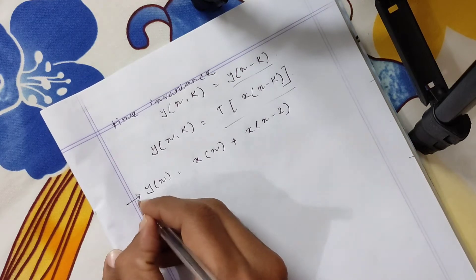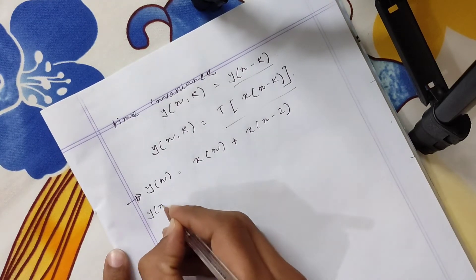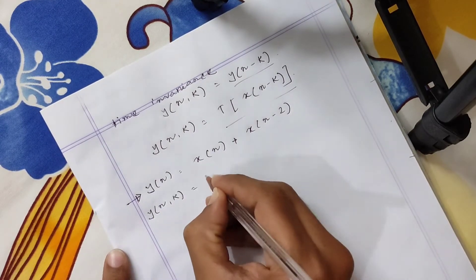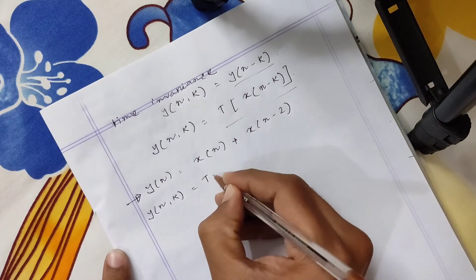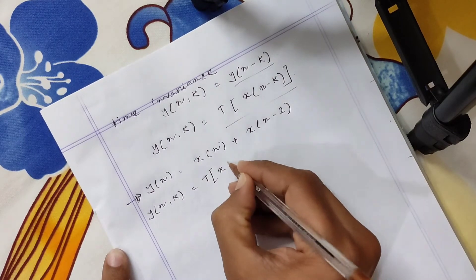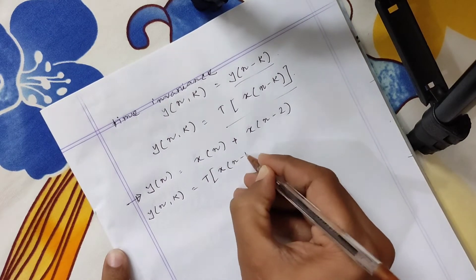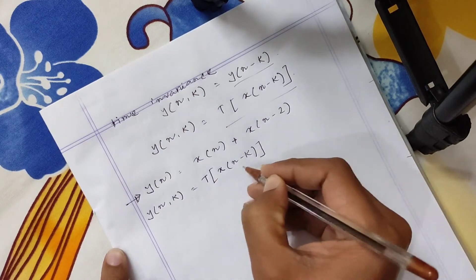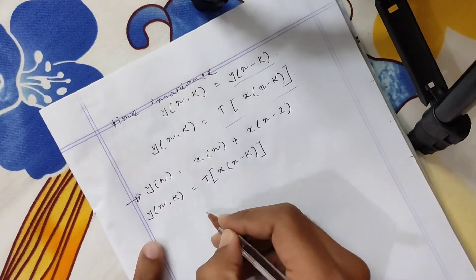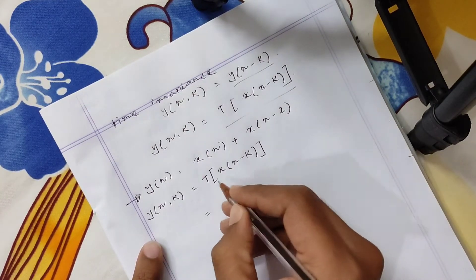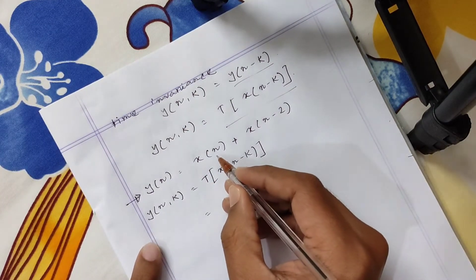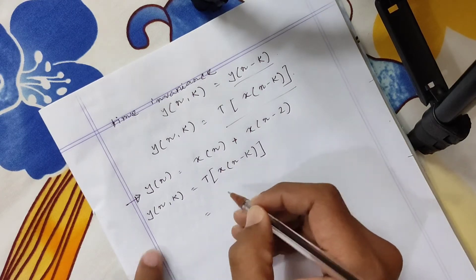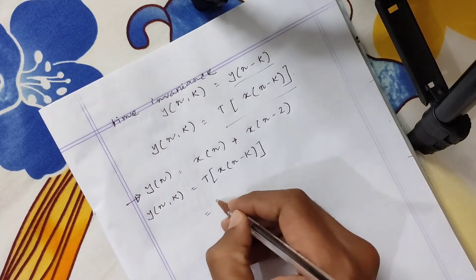This is the problem. y[n,k] equal T of x[n-k]. So x[n] will be x[n-k].